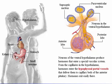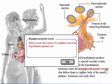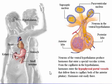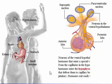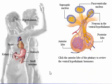Neurons of the ventral hypothalamus produce hormones that enter a special vascular system. From the capillaries in the hypothalamus, they enter the hypophysial portal vessels that deliver them to capillary beds of the anterior pituitary, where hormones exit easily. Click the anterior lobe of the pituitary to review the ventral hypothalamic hormones.